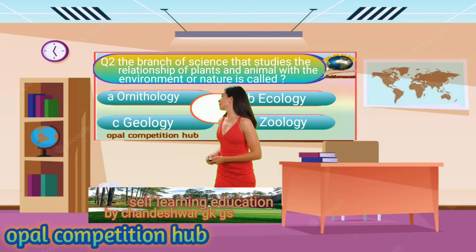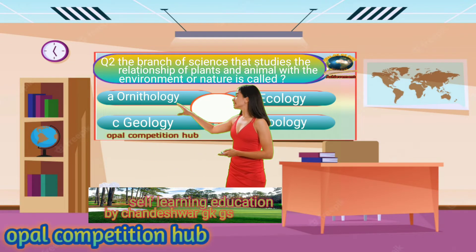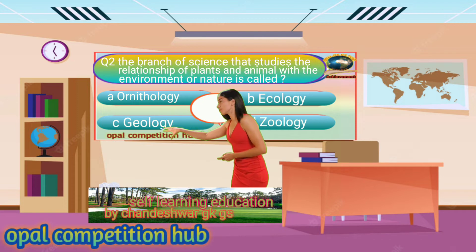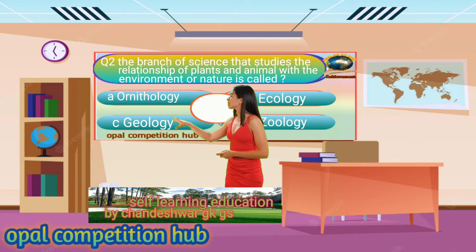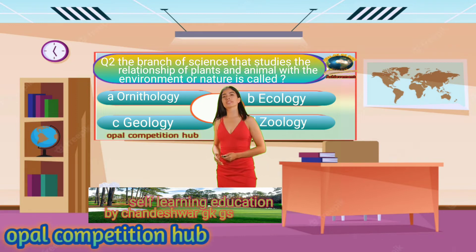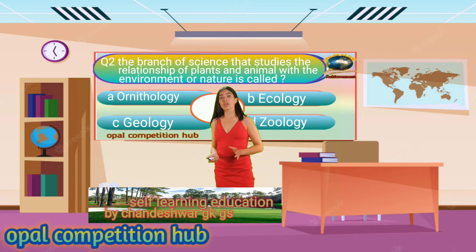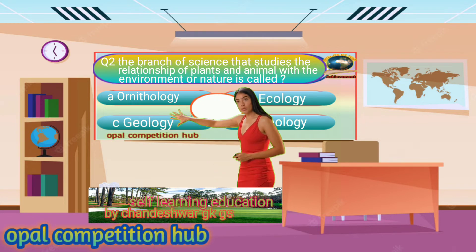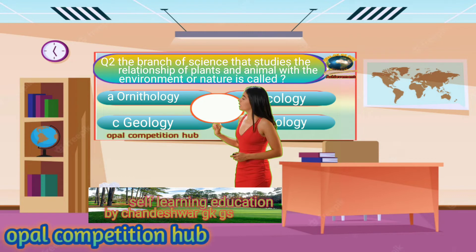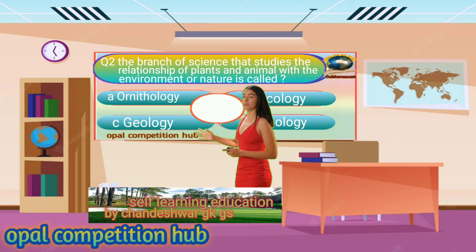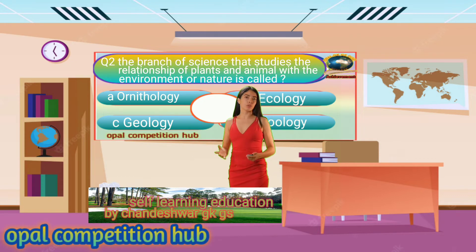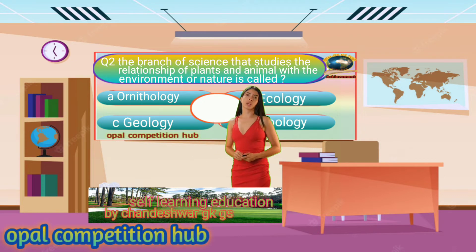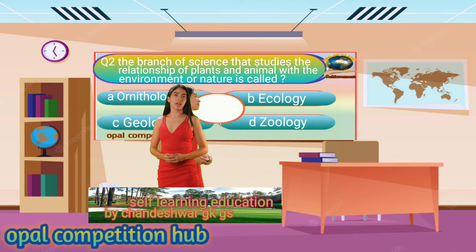Question number 2. The branch of science that studies the relationship of plants and animals with the environment or nature is called. Your options are: Option A. Ornithology, Option B. Ecology, Option C. Geology, Option D. Geology. Your time starts now.